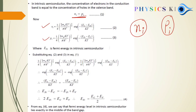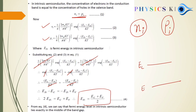To derive this: equate the equations for Ni (electrons in conduction band) and Pi (holes in valence band). Assuming Mn ≈ Mp for simplification, the exponential, KT, and other terms cancel. The result is EF = (EC + EV)/2. So taking the average of EC and EV places EF exactly at the midpoint — this is the Fermi level for intrinsic semiconductors.